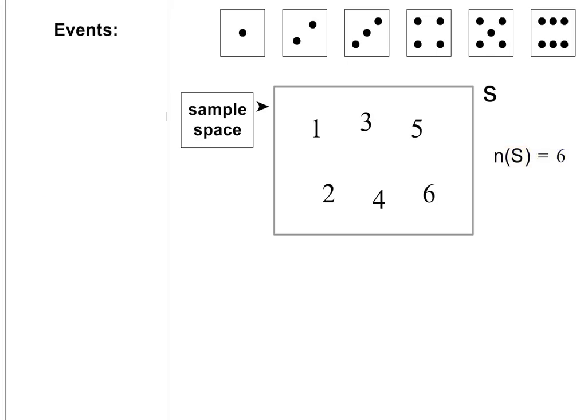We can also define specific events in an experiment. For example, we could define event A as even numbers. The outcomes in event A are therefore 2, 4, or 6. From this, we can easily find the value of N(A). It is equal to 3 because there are three outcomes in this event.